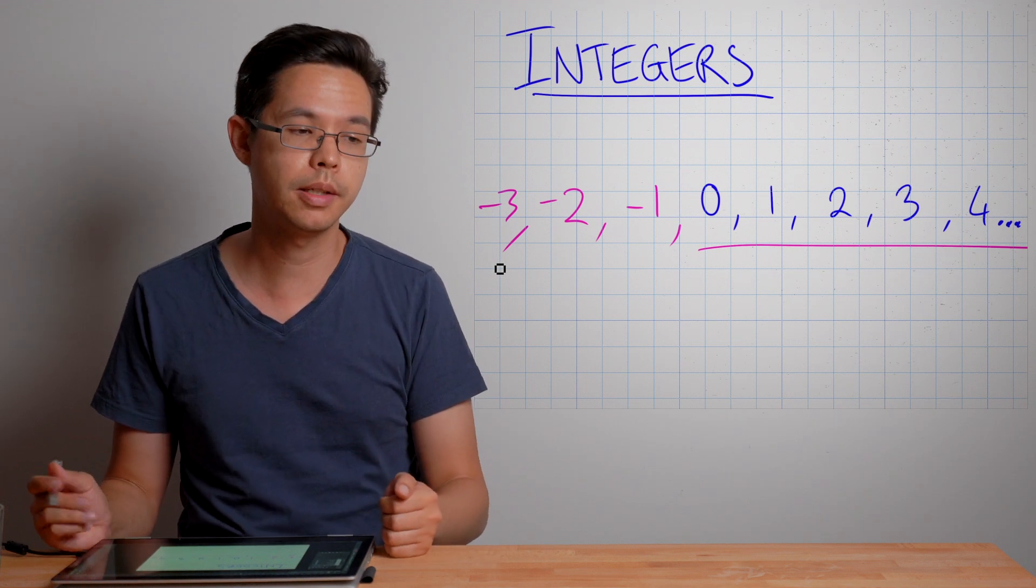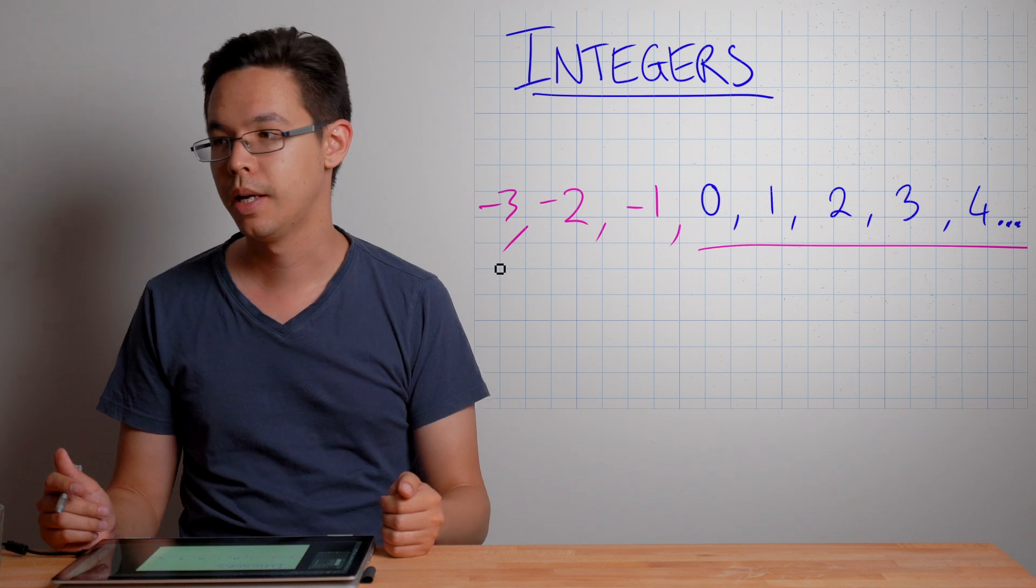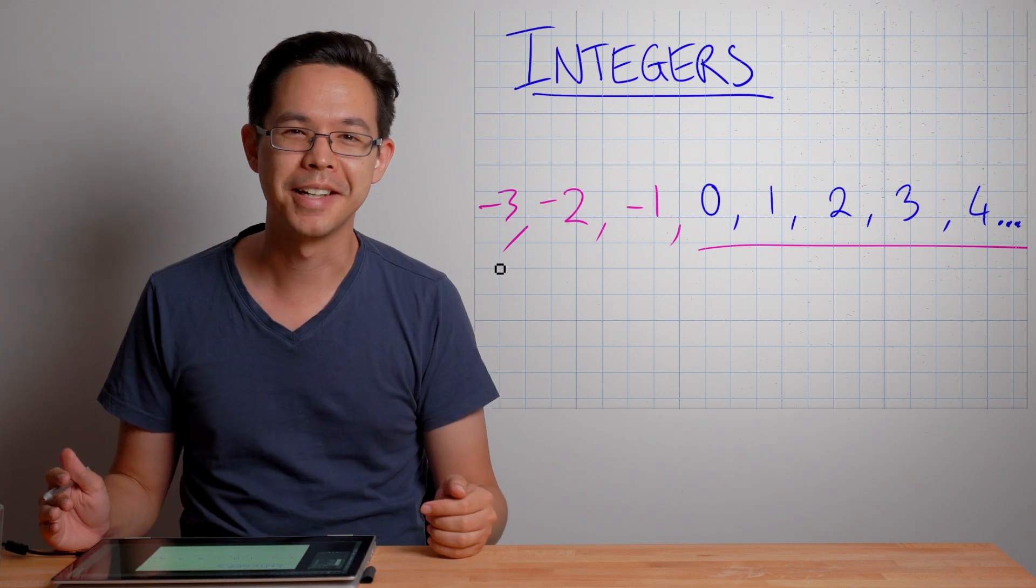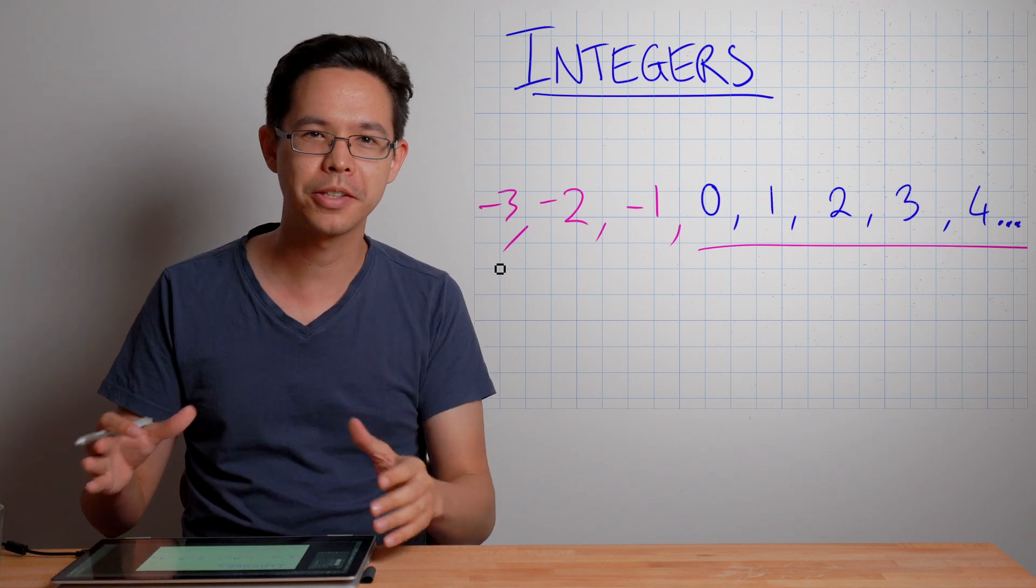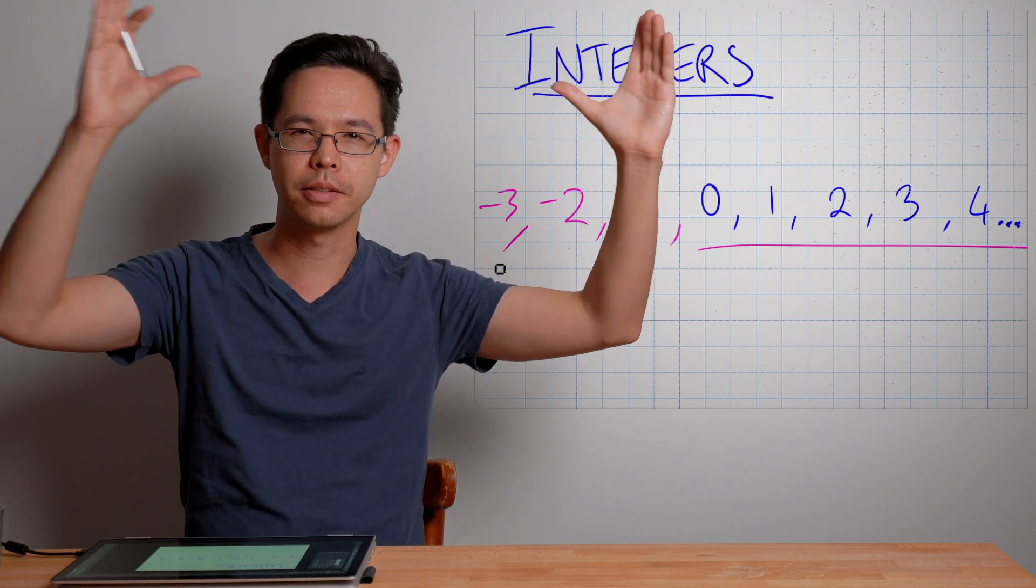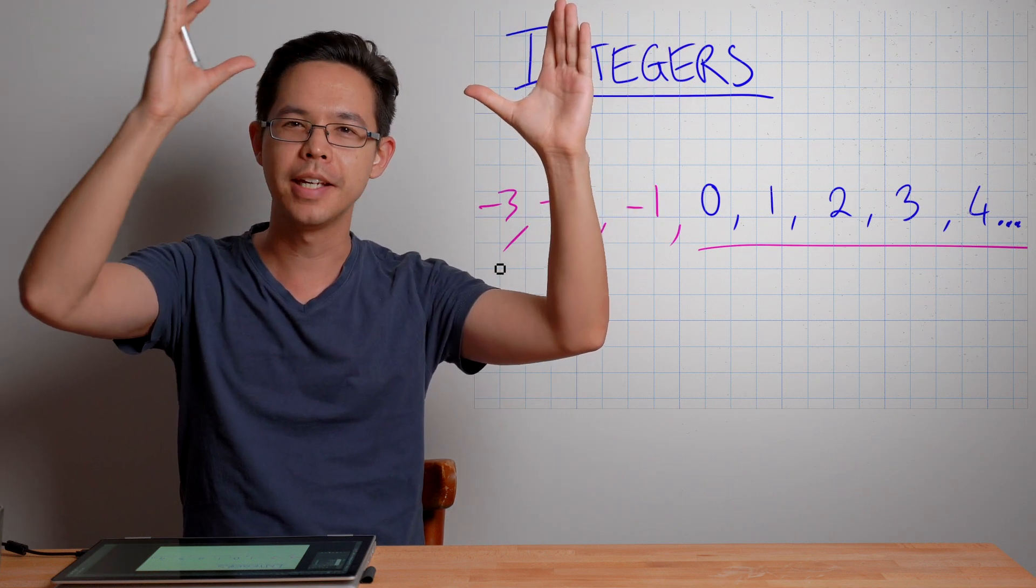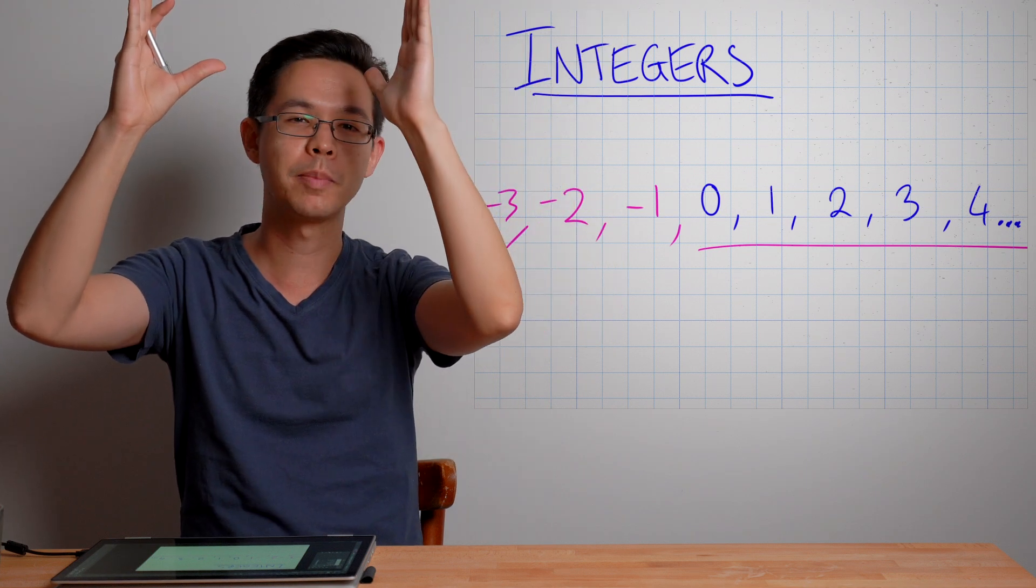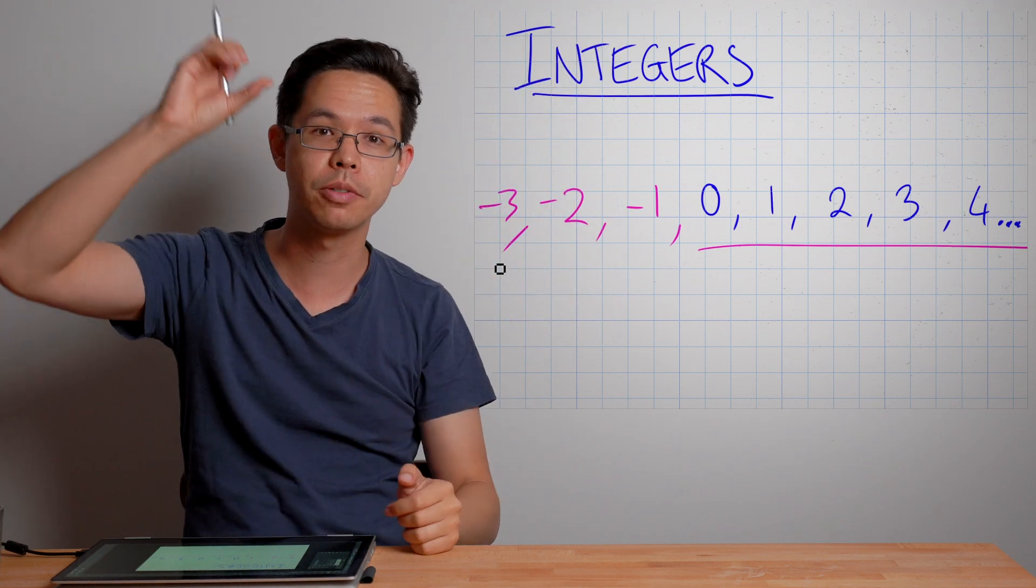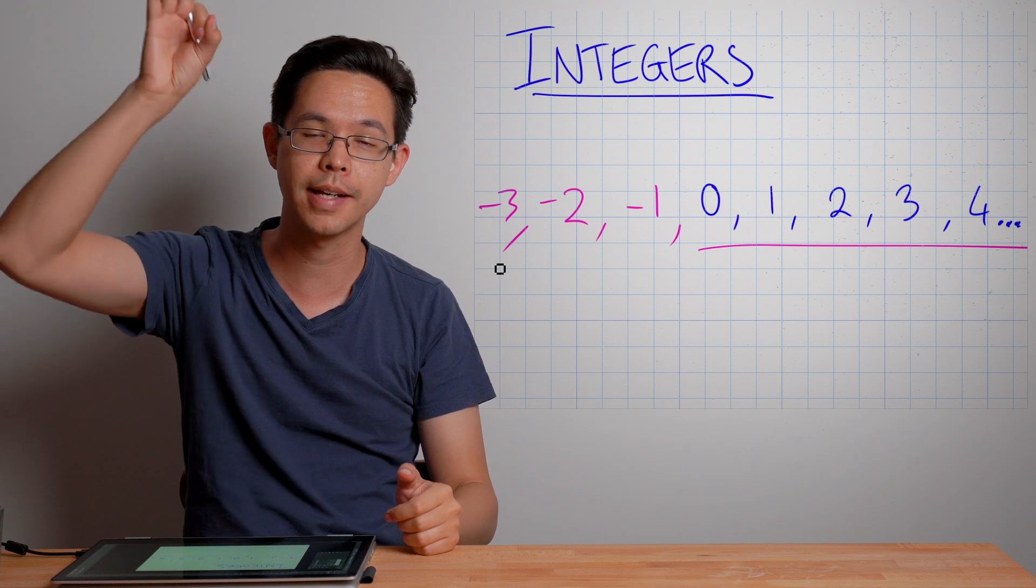Another way you can see integers in daily life is computer games. You usually have a character with a health bar above your head. And then as you take hits, your health bar decreases and you might see damage numbers show up above your character's head.